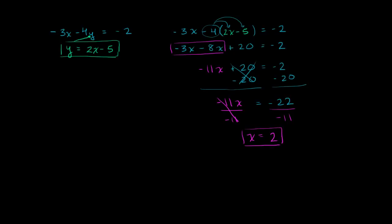We're not quite done yet. We've solved for x, but now we have to solve for y. We could take this x value into either equation and solve for y, but the second one is already explicitly solved for y, so let's use that one. It says y equals 2 times x, and we now know that x equals 2, so it's 2 times 2 minus 5.